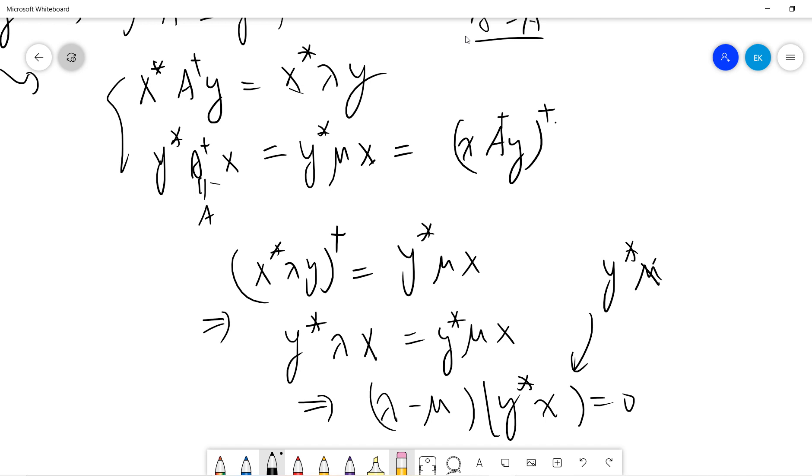You have this is zero. So this is the same as y x dagger, which is zero. So the same proof.